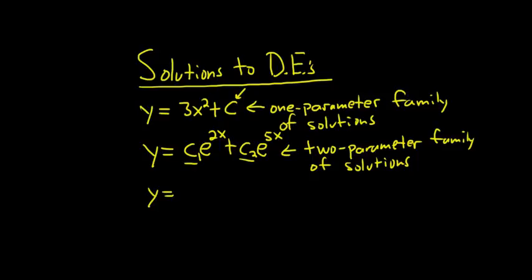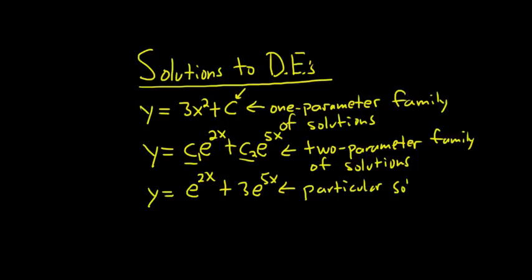If you pick the c's — say c₁ equals 1, that gives you e^(2x), and c₂ equals 3, that gives you e^(5x) — this resulting expression doesn't have any arbitrary constants. It is called a particular solution, because it's free from arbitrary parameters.